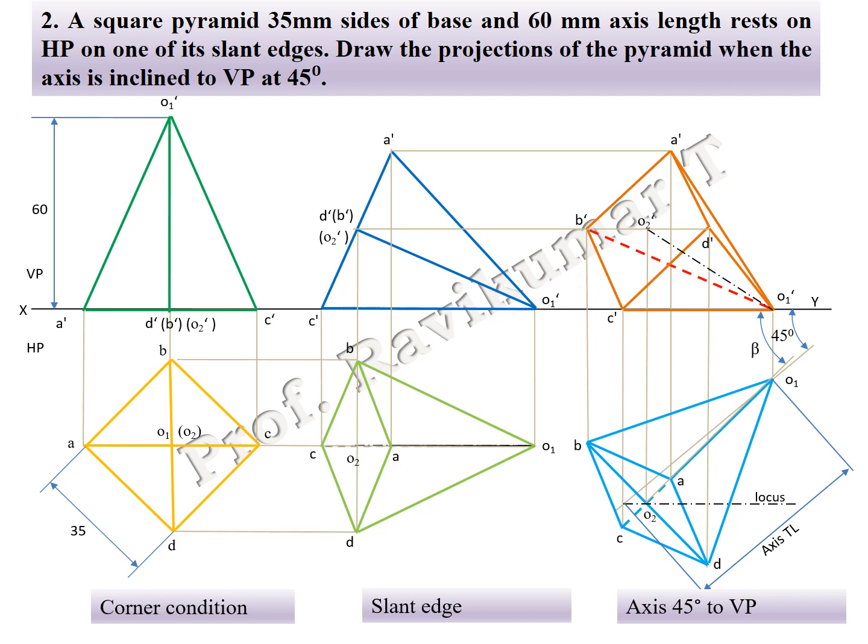To summarize: if slant edge is given, you have to take corner condition. If the word 'appears' is not in the problem, you have to go with locus. If the word 'appears' is present in the problem, you need not find out the beta angle — you do not need to go for the locus method. This completes the slant edge section.